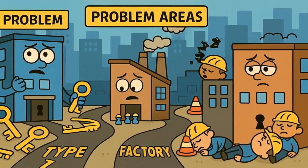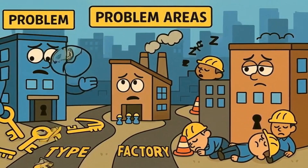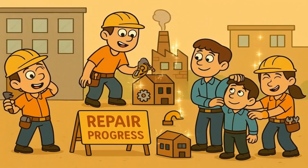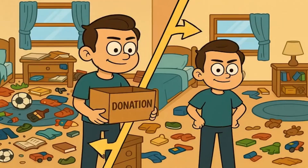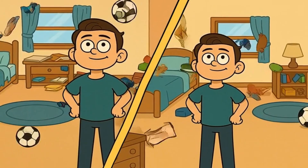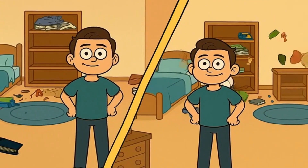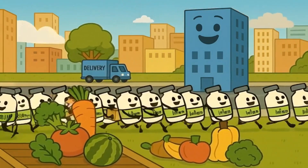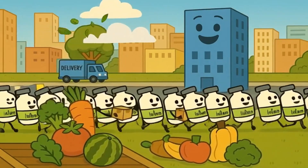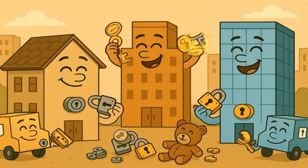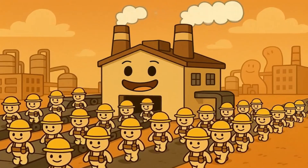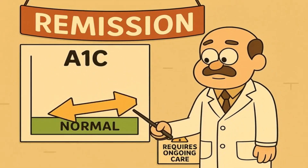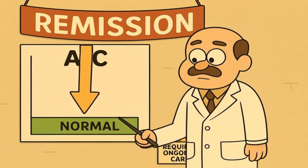Type 2 diabetes is more complicated. Remember, this is when the buildings change their locks, or the factory doesn't make enough workers, or the workers get tired and lazy. Some of these problems can actually be fixed — well, at least partially. When people lose weight, exercise regularly, and eat foods that don't require too many delivery trucks all at once, sometimes the insulin workers can start doing their jobs better again. The buildings might change their locks back, the factory might start making more workers, the tired workers might get some energy. And when this happens, the A1C can come down to normal levels, and some doctors might say that the diabetes is in remission.